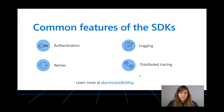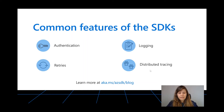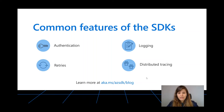The next thing is retries, which is really crucial for cloud application development. There's also a logging policy that should make debugging easier so you can see what is happening in your application. The last item I wanted to highlight is distributed tracing — so if you're using a couple of different services you can see how your request is traveling between them. If you want to learn more, I recommend going to aka.ms/azsdk/blog where you'll find blog posts on how to use them.